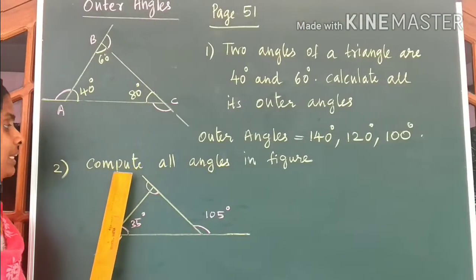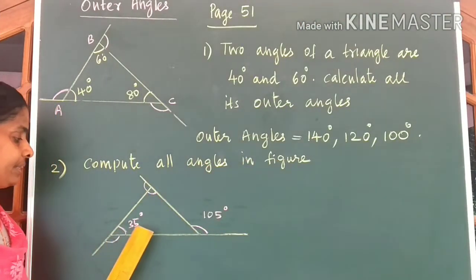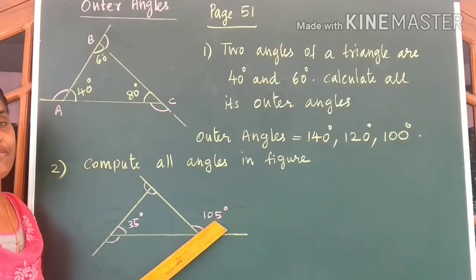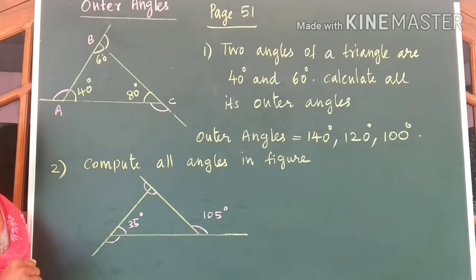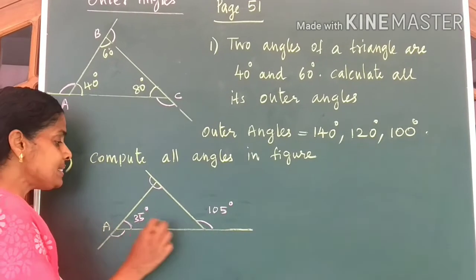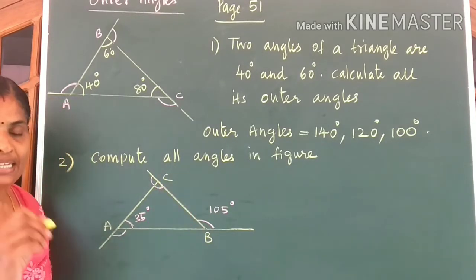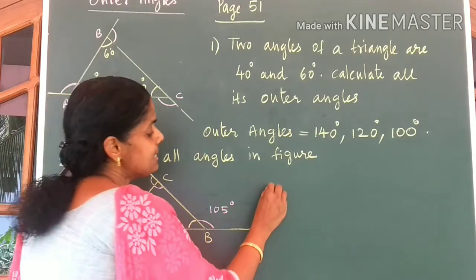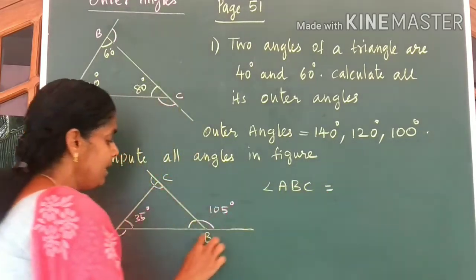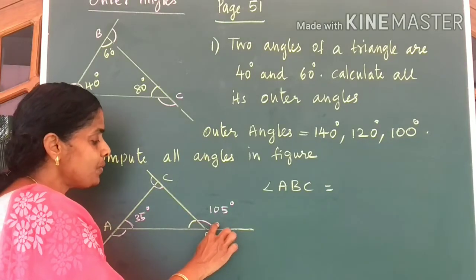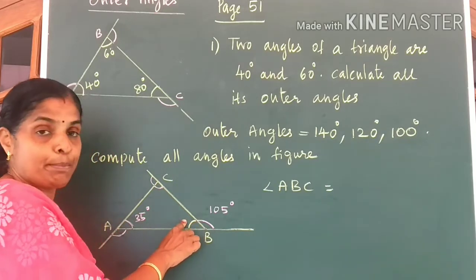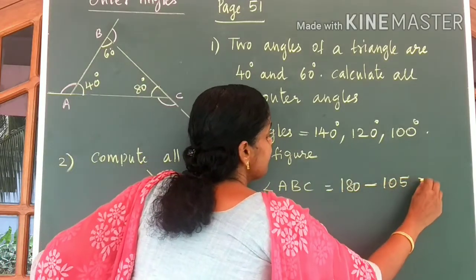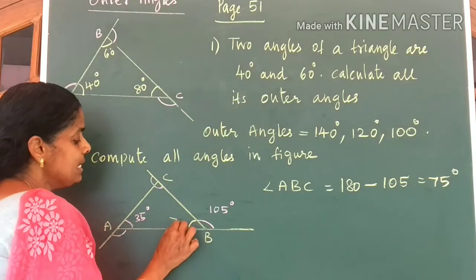Come to the second question. Compute all angles in the figure. First of all, let us name this triangle as ABC. Let us find the inner angle at B. This angle can be written as angle ABC. We know these two angles form a linear pair, so inner angle at B is equal to 180 minus 105, which gives you 75 degrees. Let us mark 75 degrees here.